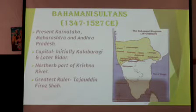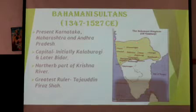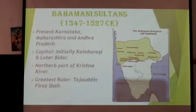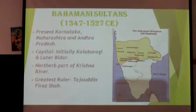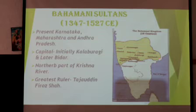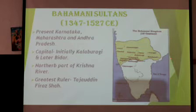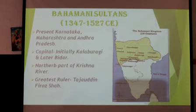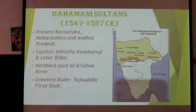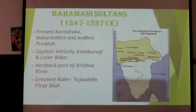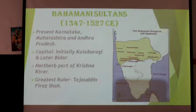Initially the capital of the Bahamani Sultans was Kalaburagi, but later it was shifted to Bidar. The Bahamani Sultans belonged to the northern part of the Krishna River — that marking on the map is the Krishna River, which divides the region. The most famous ruler of the Bahamani kingdom was Tajuddin Feroz Shah.